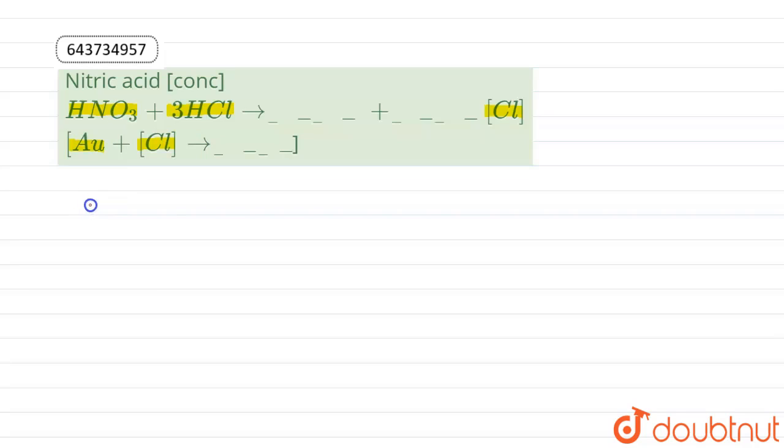dissolve noble metals like gold and platinum. When one mole of HNO3 and three mole of HCl